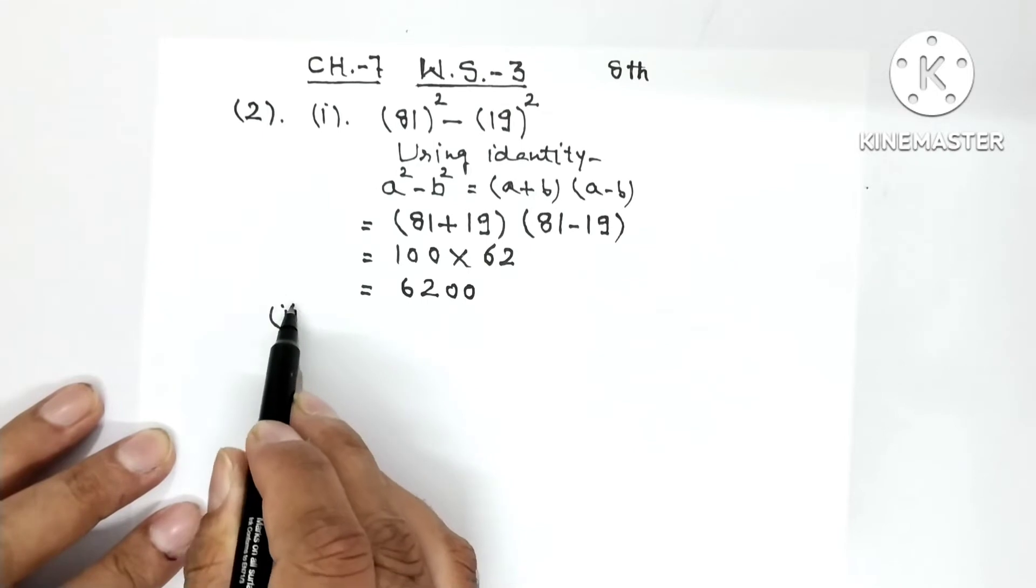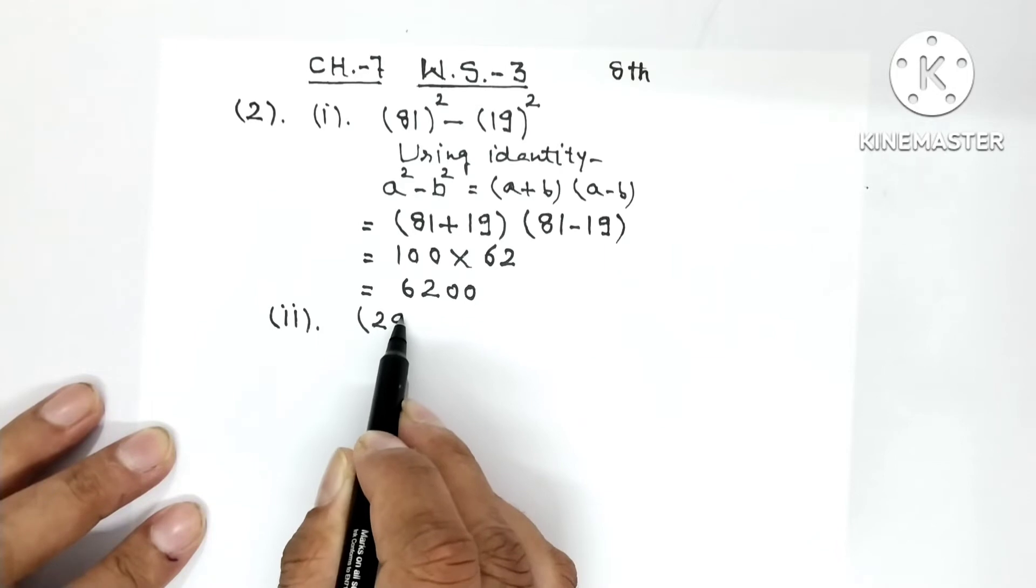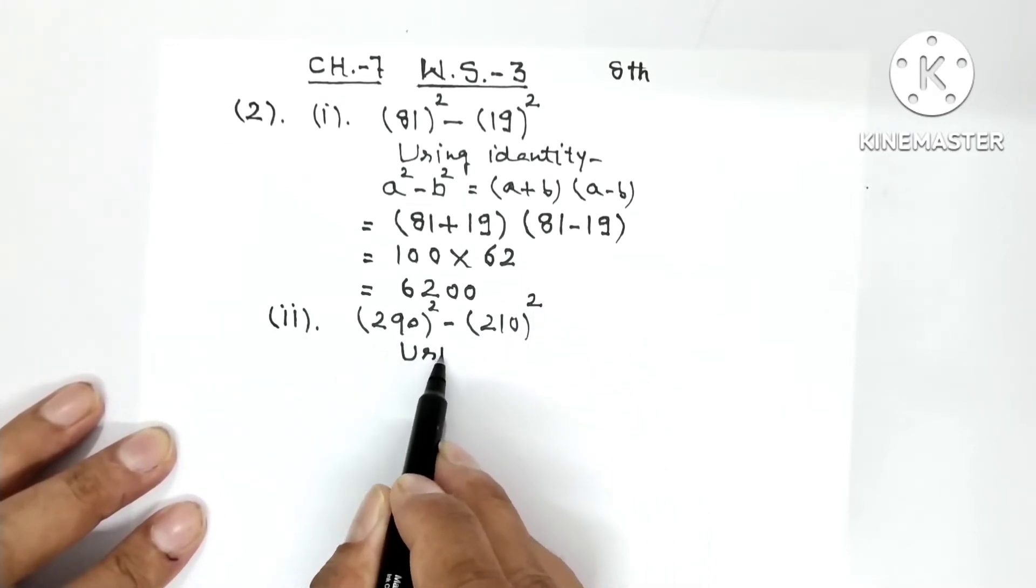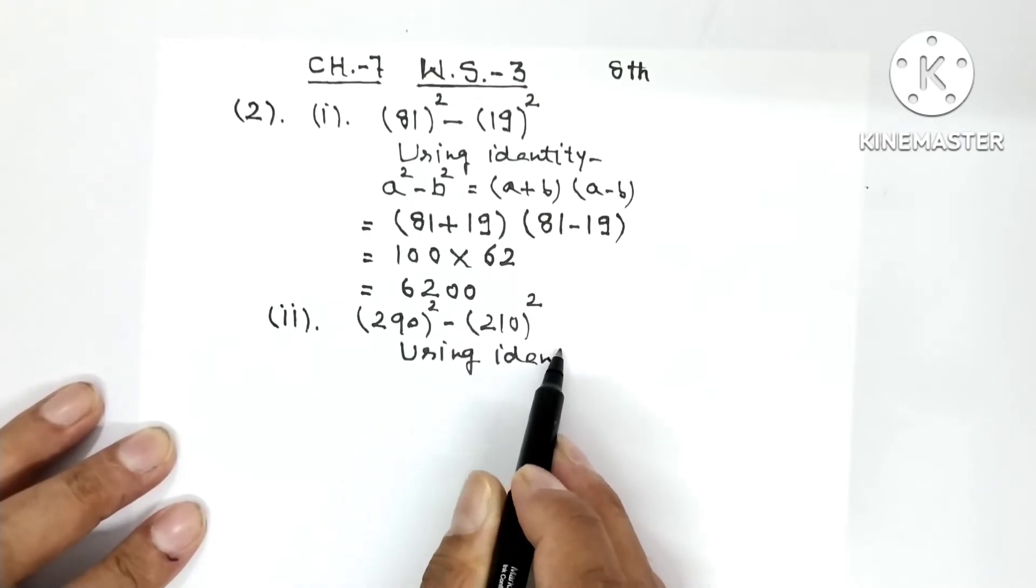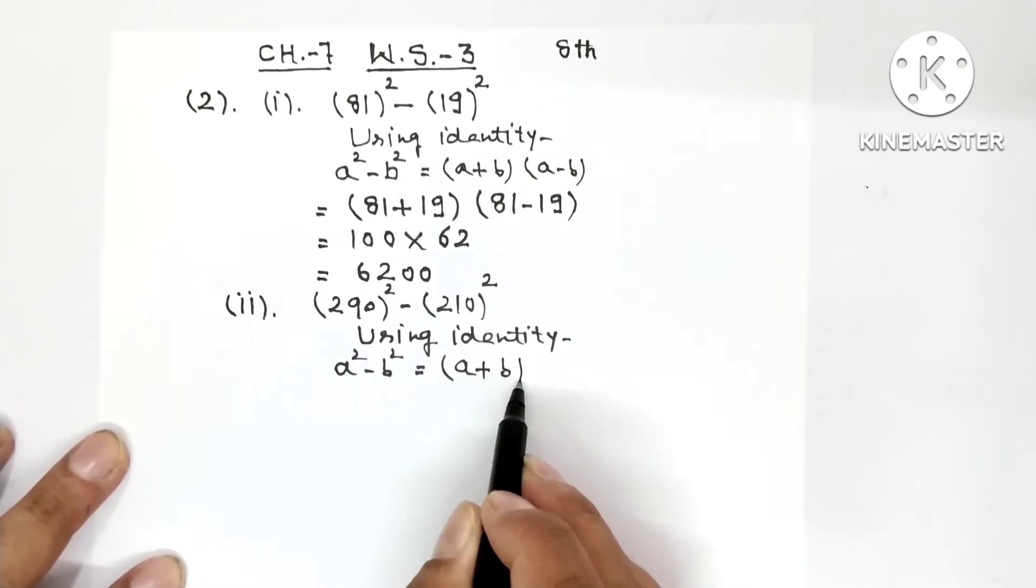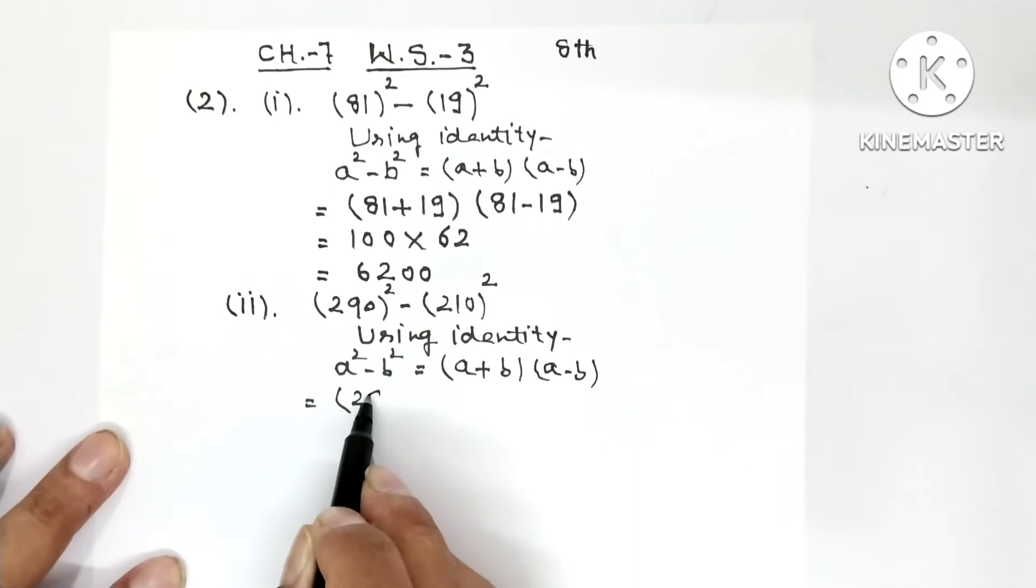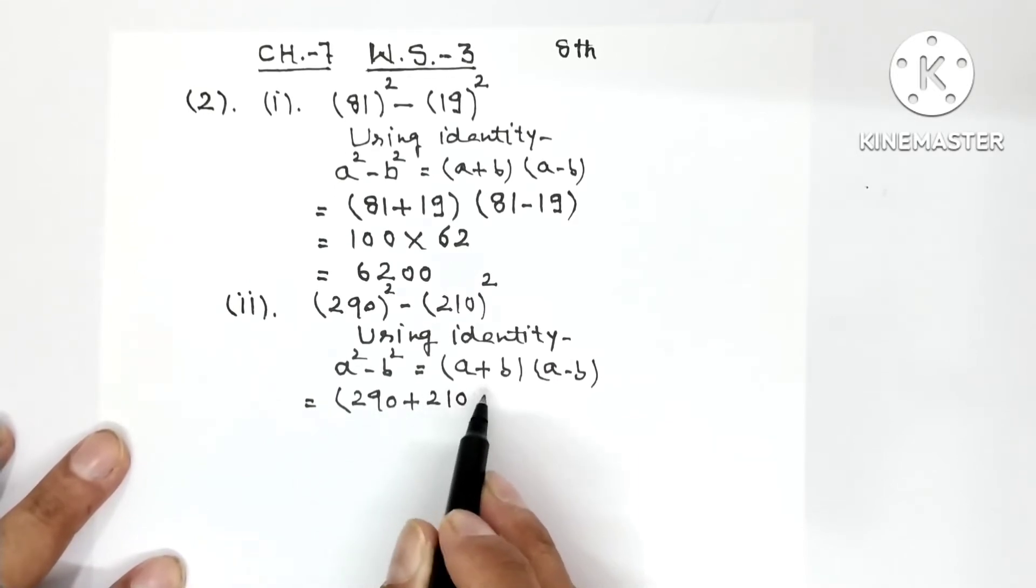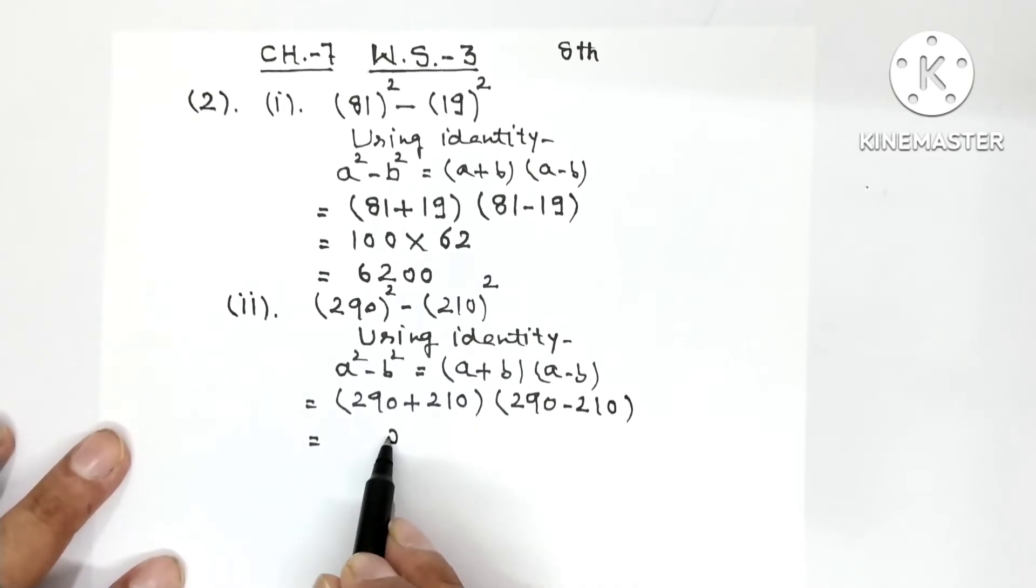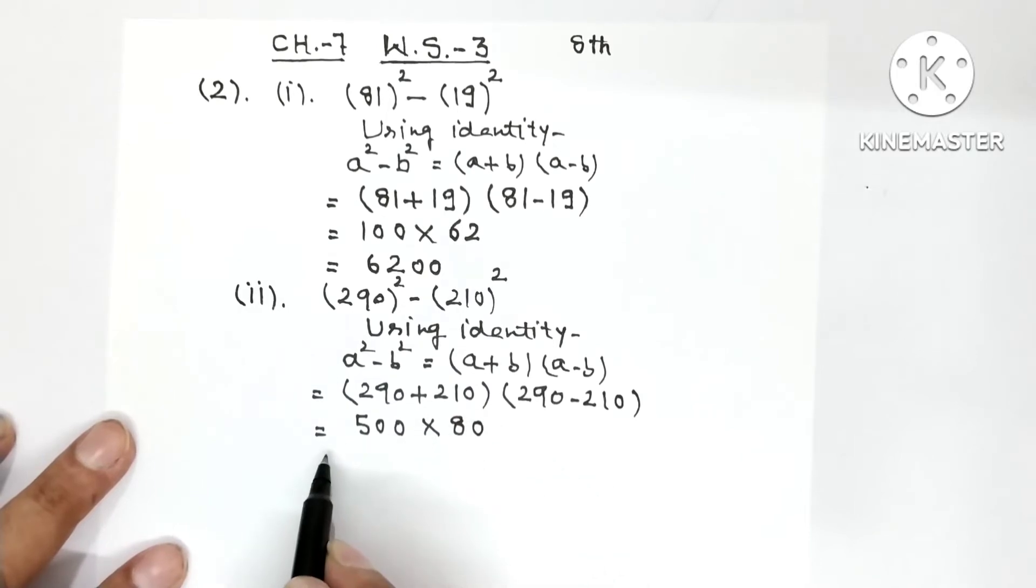Second part: 290 whole square minus 210 whole square. Using the same identity, a square minus b square is equal to a plus b into a minus b. So a is 290 plus b is 210 into 290 minus 210. If you add 210 to 290, you get 500. Multiplied by, if you subtract 210 from 290, you get 80. Then 8, 5, 0, 40, and after that how many zeros, 1, 2, 3. The answer is 40,000.